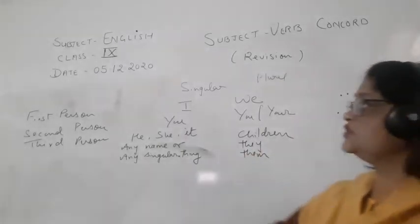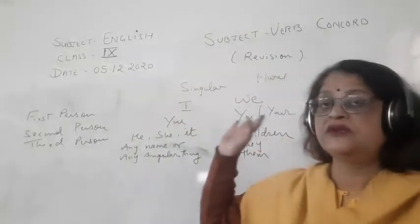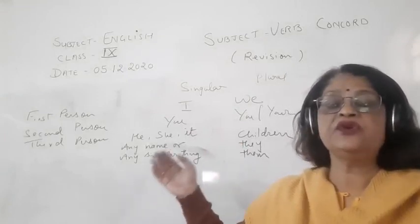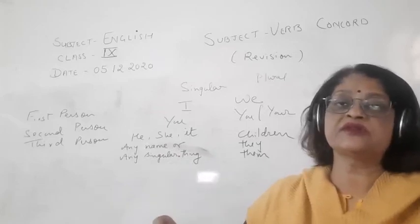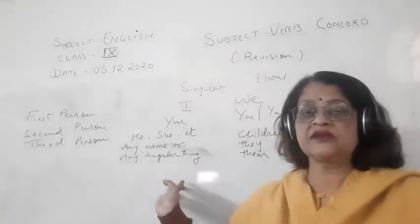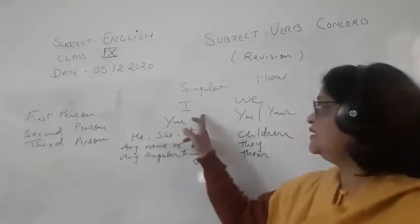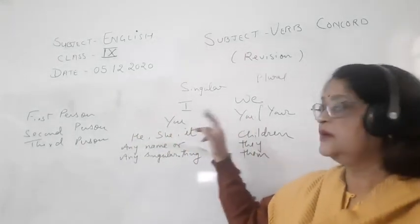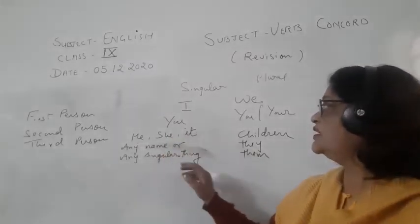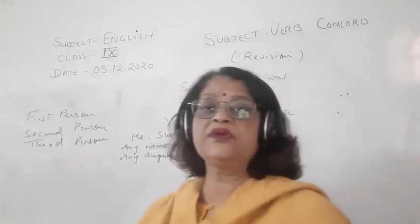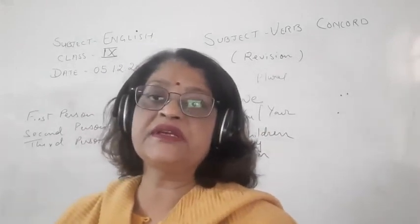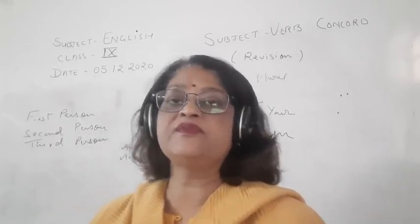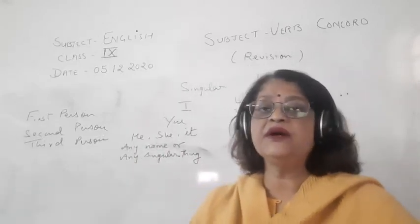You can see I have written first person, second person, third person — both singular and plural. These are pronouns, and the noun or pronoun which comes before the verb is the subject, so these can be subjects in sentences. First person singular is 'I', plural is 'we'. Second person is 'you'. Third person singular is 'he', 'she', 'it', or any name or singular thing. Plural is 'they', 'them'. These are the basic concepts of subject-verb agreement that you should know.